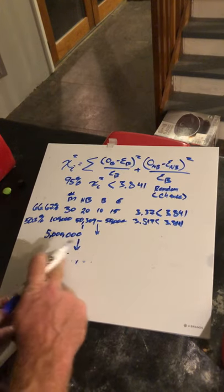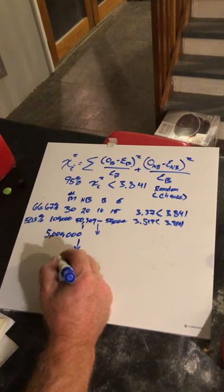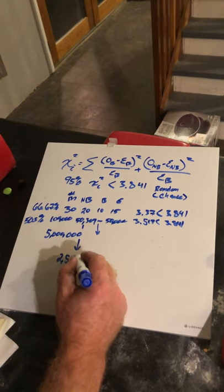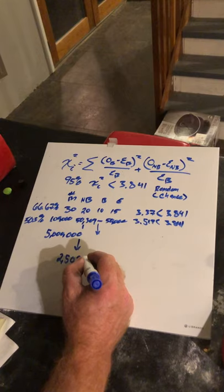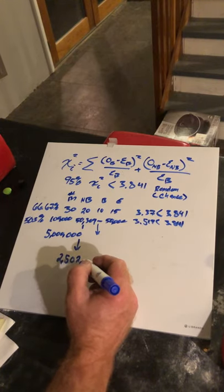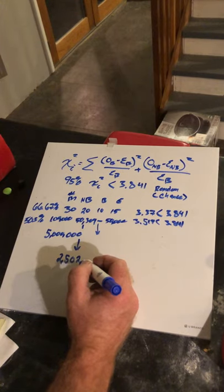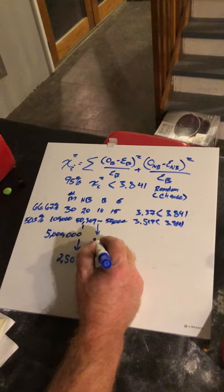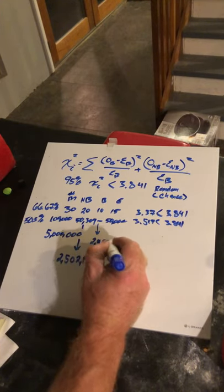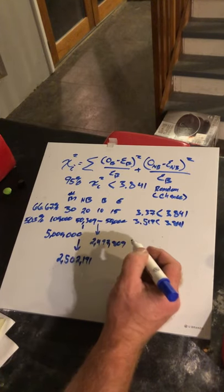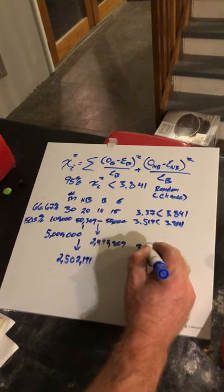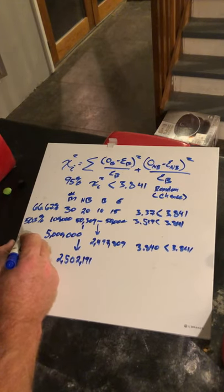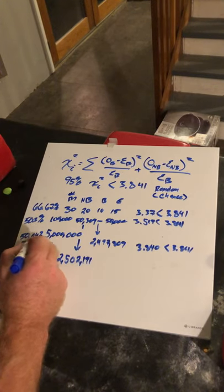the no-buckle observation of 2,497,809, the buckle matches of, wait, I got that wrong. Wow, I am so sorry, guys. 2,500,502,191, this would be 2,497,809, results in a 3.840, which is still less than 3.841,